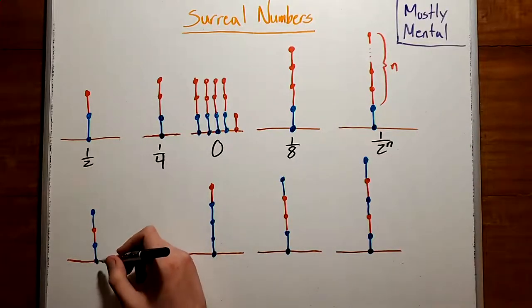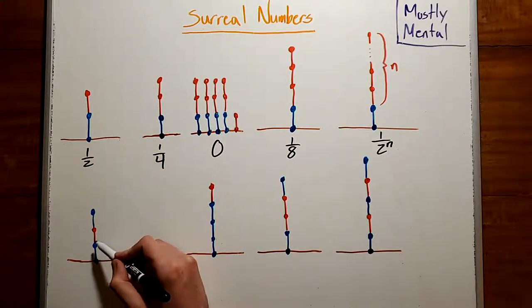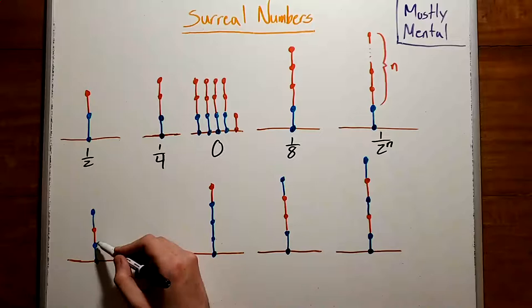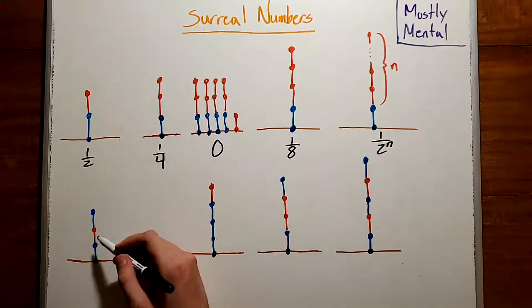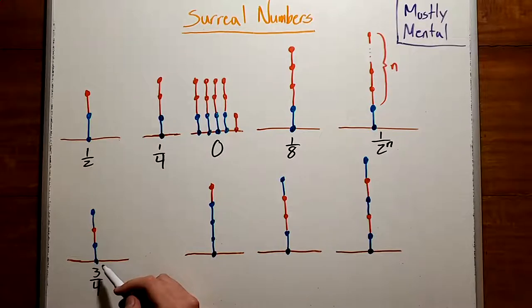Okay, now what happens when we mix blue and red edges? Well, this should be more than 1 half, since there's more blue, but it should be less than 1 since there's red on top. And so we might guess 3 fourths. And with a bit of care, we can show that four of these balance with three red edges, and so that is the right value. And we can keep going like this. As an exercise, see if you can find the values for all of these positions. And once you have those, see if you can spot the more general pattern for values of towers like these.